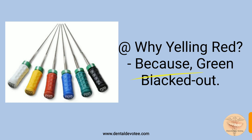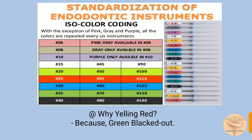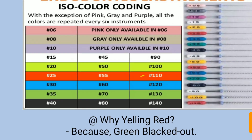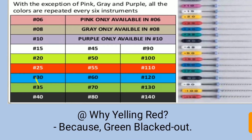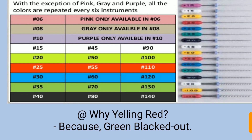To recap: sizes 6, 8, and 10 correspond to pink, gray, and purple respectively. From size 15 onwards, the color coding repeats every six instruments — white, yellow, red, blue, green, black — cycling through from sizes 15 to 60 in increments of 5, then from 60 onwards in increments of 10.